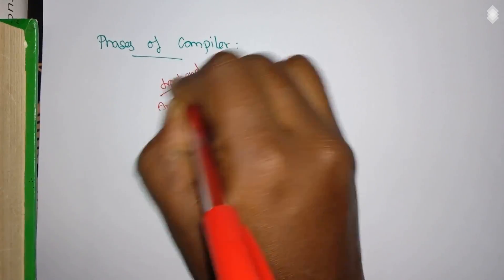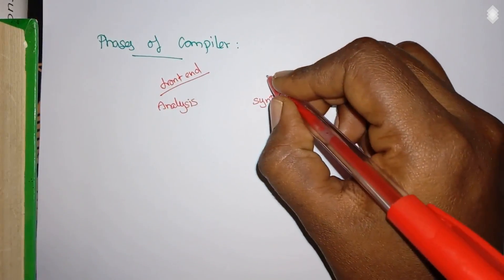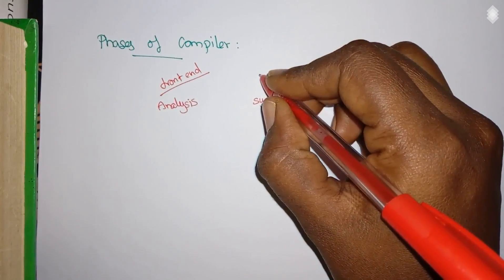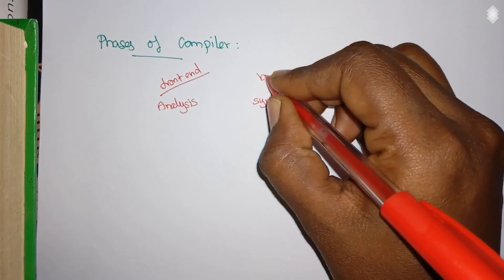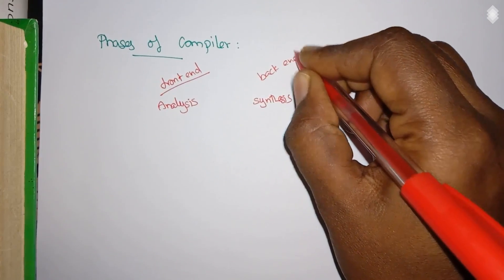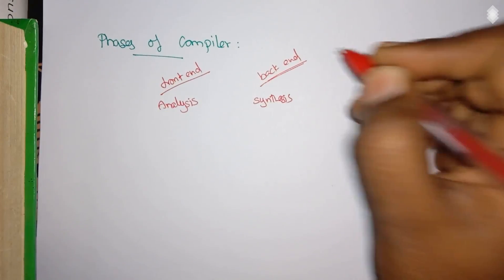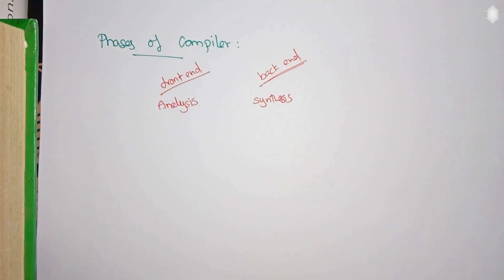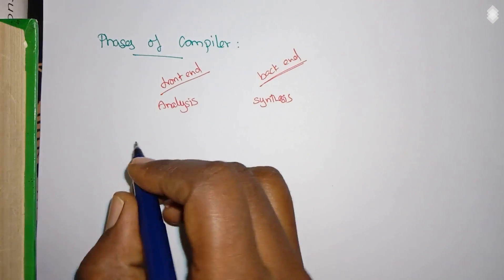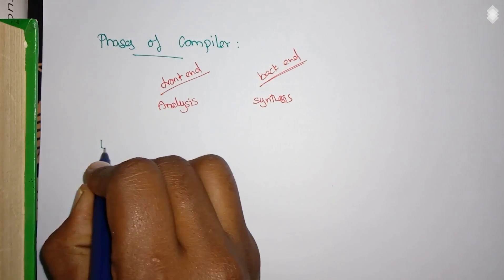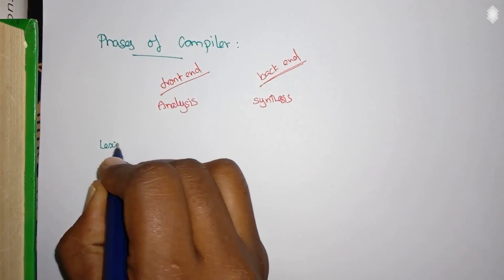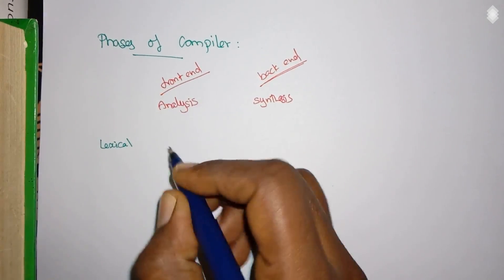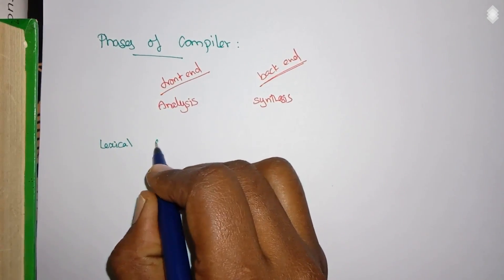In general, we call the analysis phase the front end of the compiler and the synthesis phase the back end of the compiler. Within the analysis phase, we have: lexical analyzer, syntax analyzer, and semantic analyzer.